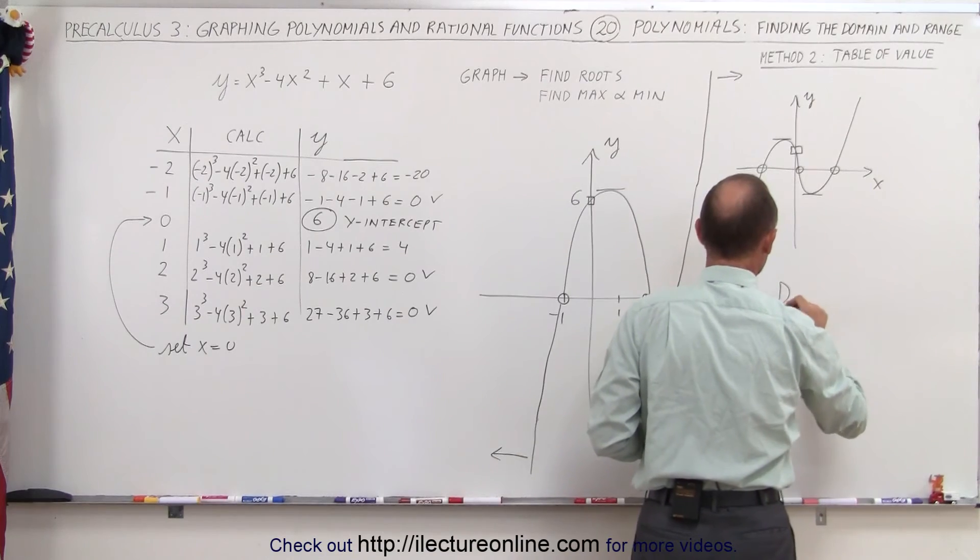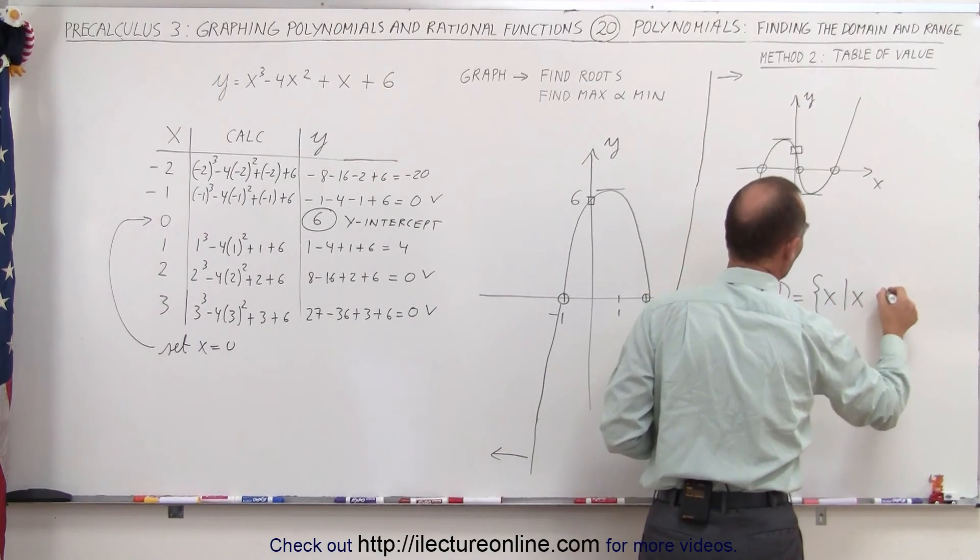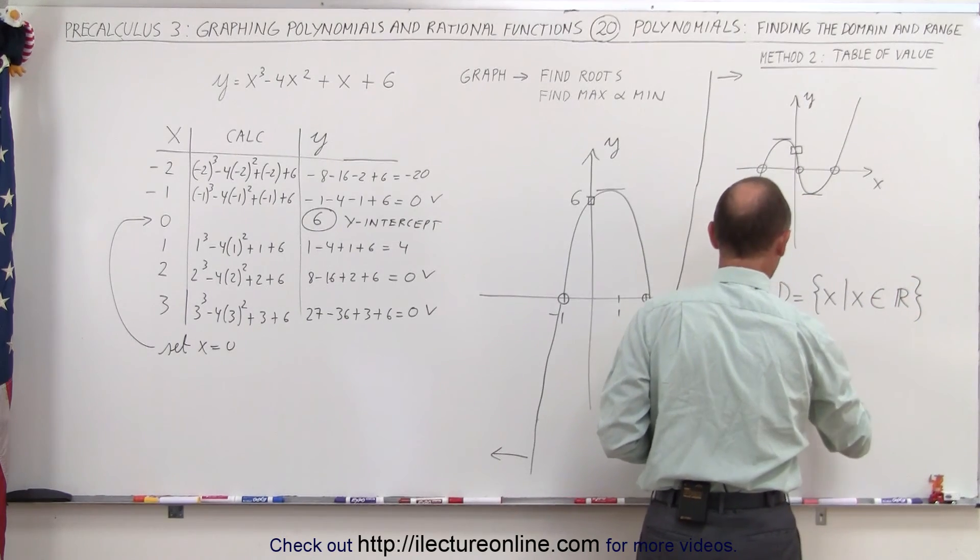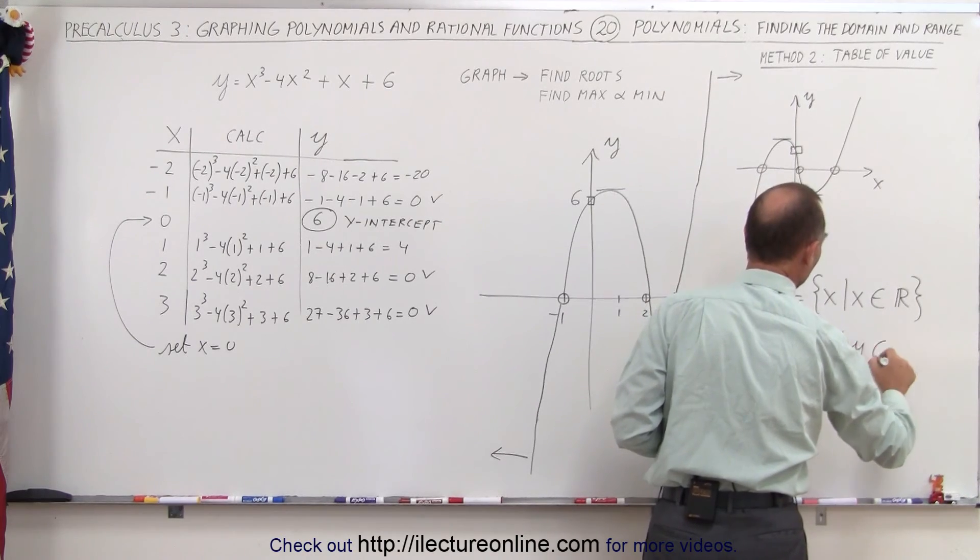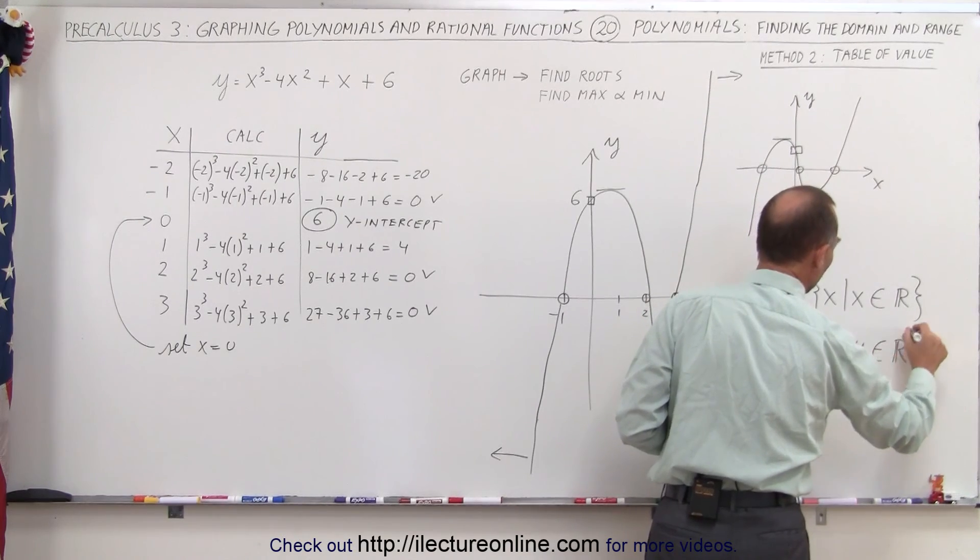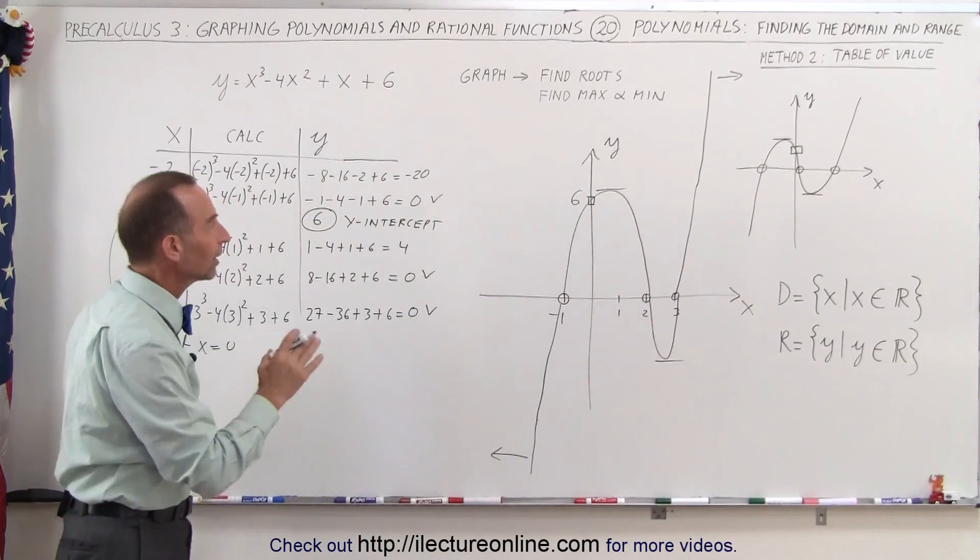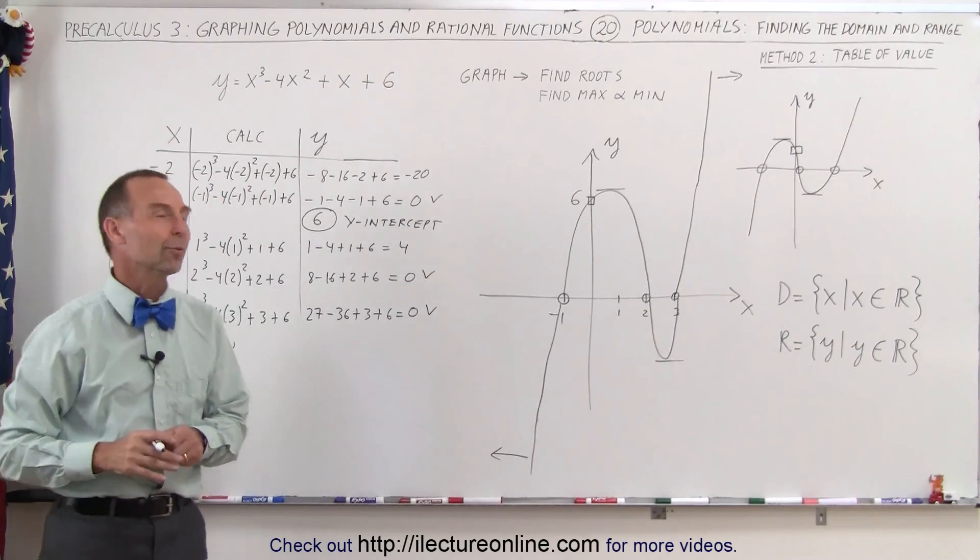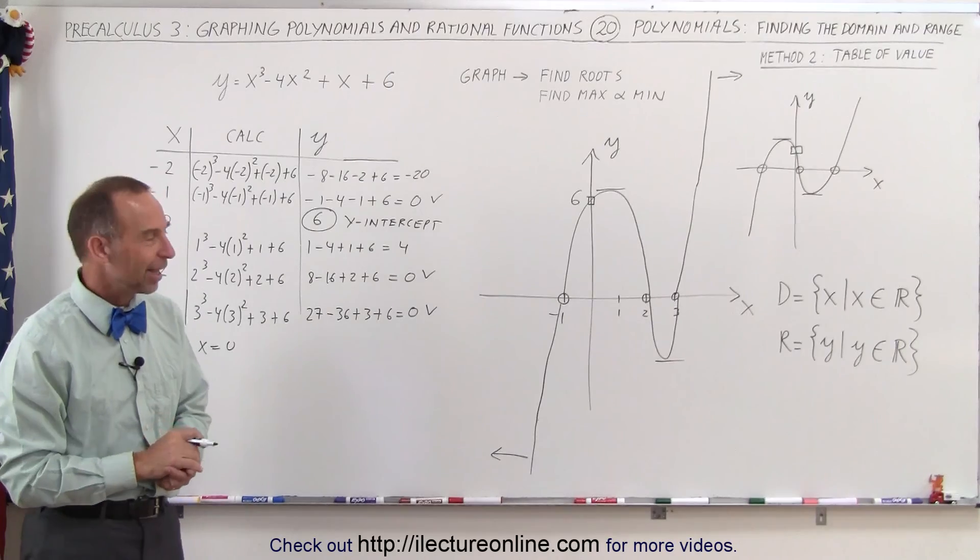We can say that the domain is equal to all the x's, such that the x's are an element of the reals. And we can say that the range is equal to all the y's, such that the y is an element of the reals. No restriction of the domain and range for a polynomial like this, a third-order polynomial, no restrictions. The domain and the range go out to infinity, both the negative and the positive sense. And that's how it's done.